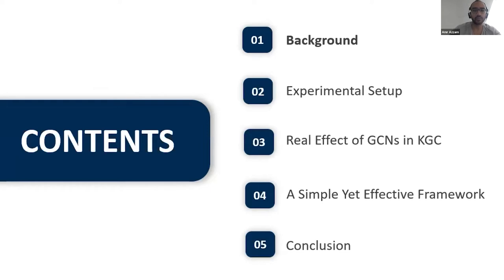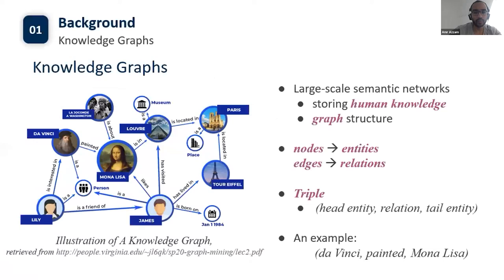I will introduce our work in five aspects. First, the background. A knowledge graph is a large-scale directed graph that stores human knowledge, where nodes represent entities and edges represent relations. We usually use a triple to represent a fact in the real world, which has a head entity, a relation, and a tail entity. For example, from the knowledge graph on the left, we know that da Vinci painted Mona Lisa, so da Vinci is the head entity, painted is the relation, and Mona Lisa is the tail entity.